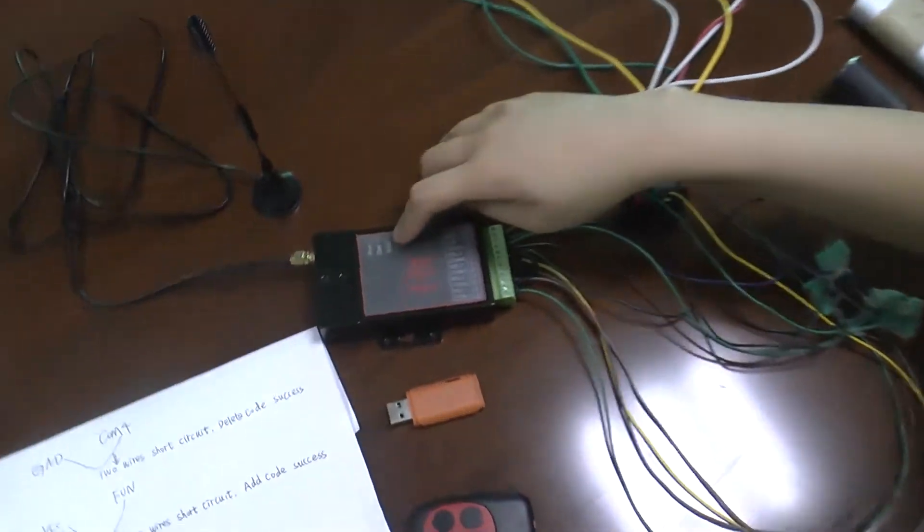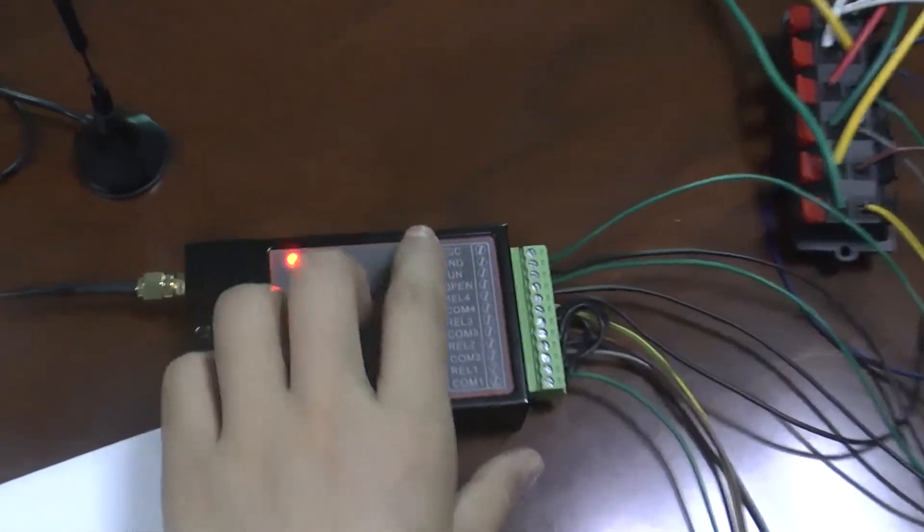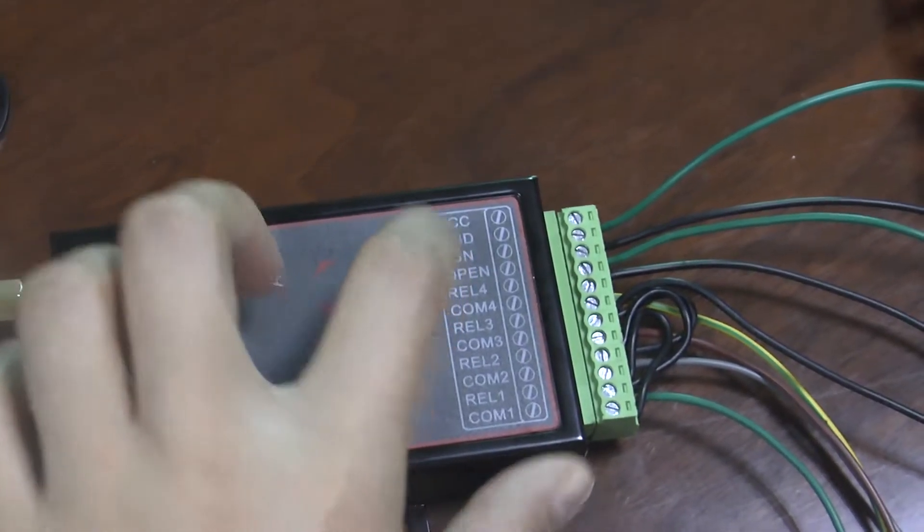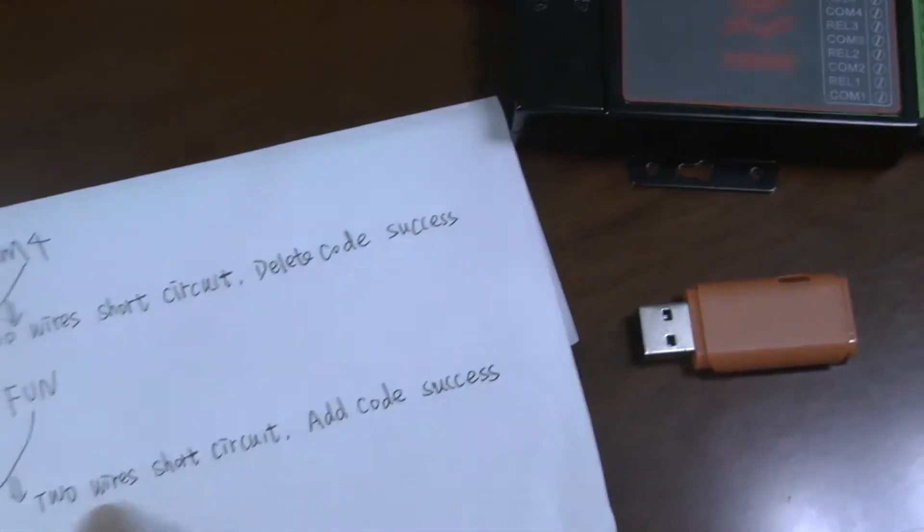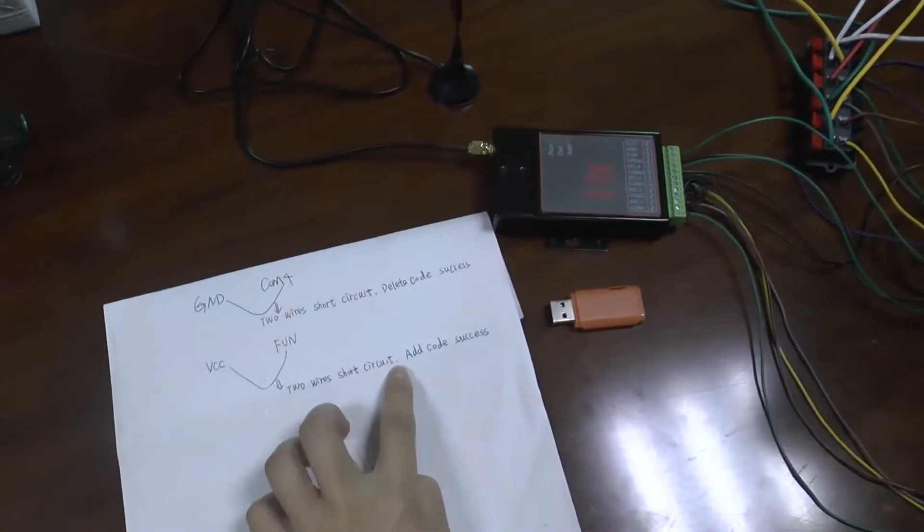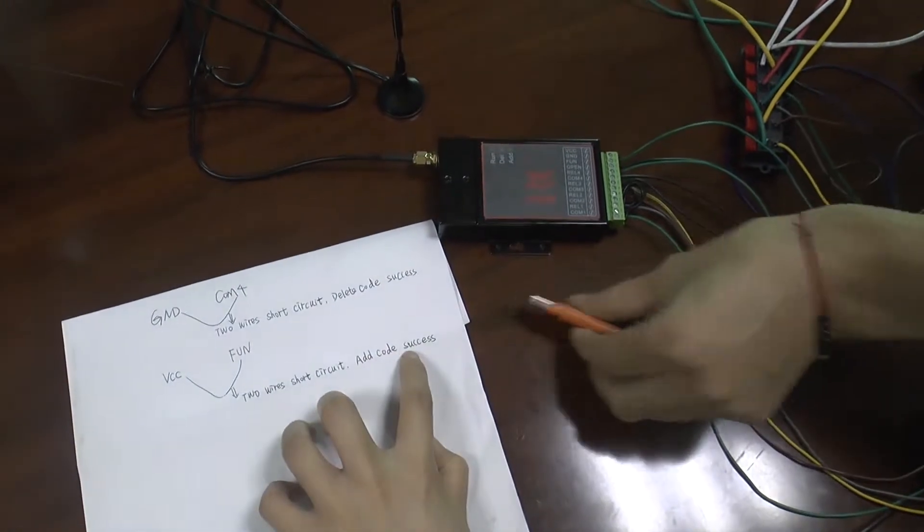If you want to add a code, please connect the VCC and FUN, these two lines. Connect these two wires for a short second and the code succeeds.